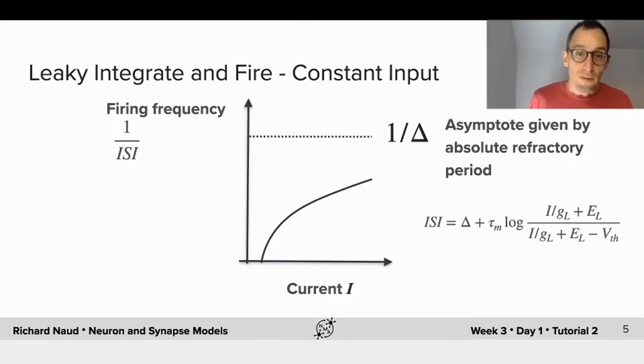So this firing frequency will depend on the current, the magnitude of the current being injected. Firing will start at some point where current is strong enough to elicit an action potential, and then it follows this logarithmic curve which will go to an asymptote of 1 over the absolute refractory period.